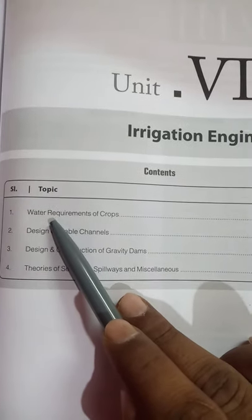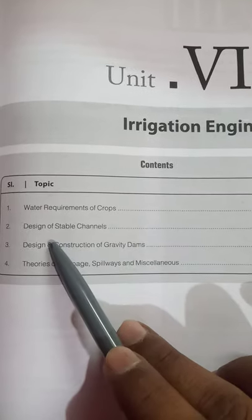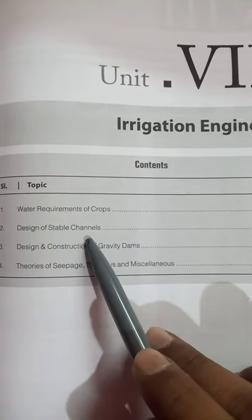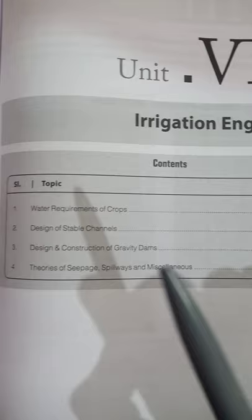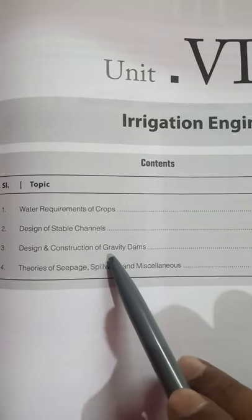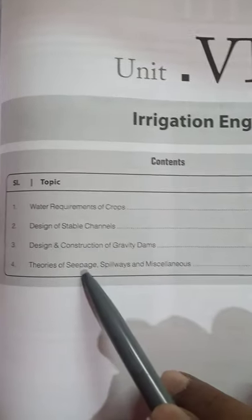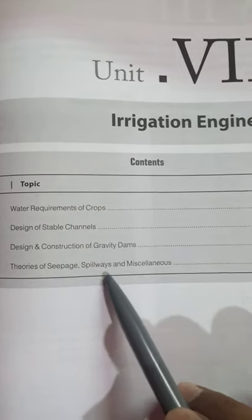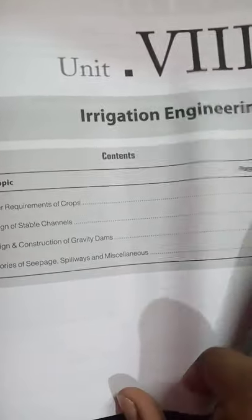First chapter is water requirement of crops. Second is design of stable channels. Third is design and construction of gravity dams. Fourth is theory of seepage, spillways and miscellaneous. After this, we'll discuss the syllabus.